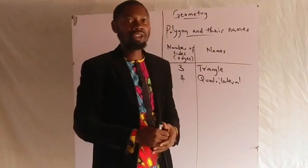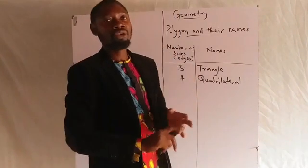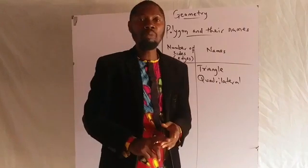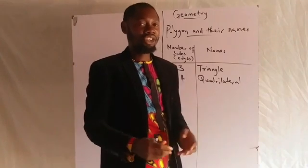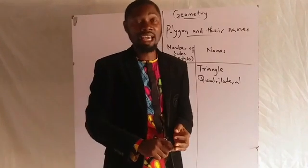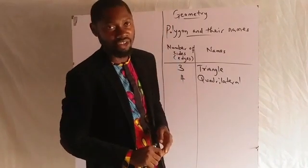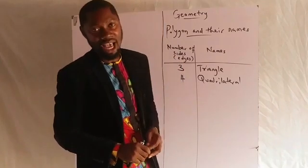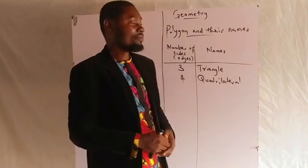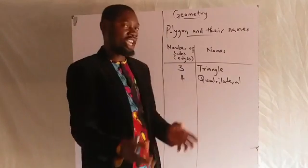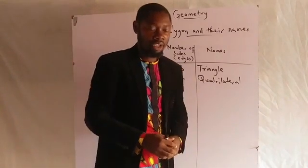Quadrilateral refers to four-sided shapes and includes rectangle, square, rhombus, and trapezium. All these shapes have four straight edges. A square has four straight edges; a rectangle also has four straight edges, as do rhombus and trapezium. There are more shapes that fall in the quadrilateral category, but those are a few of them. All four-sided shapes are called quadrilaterals, and three-sided shapes are called triangles.